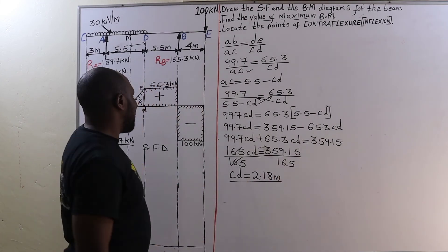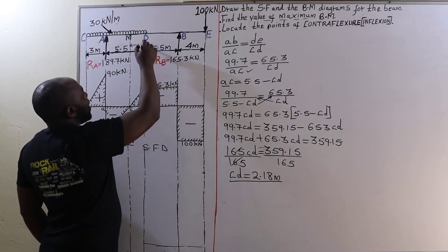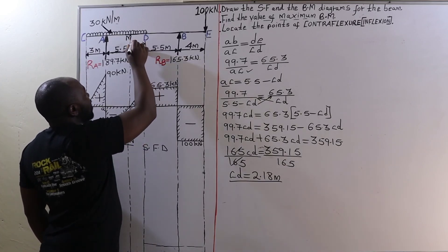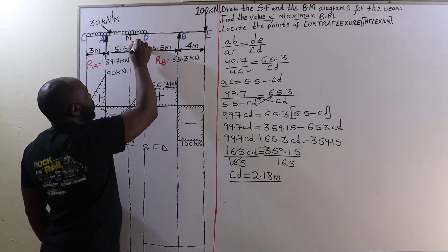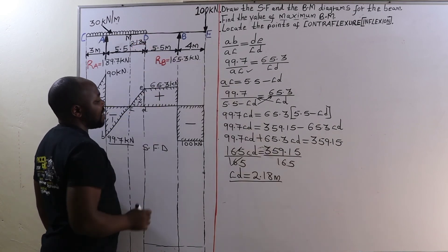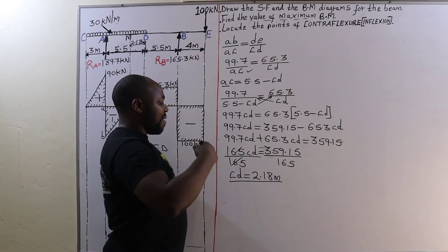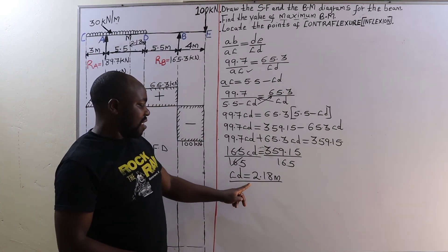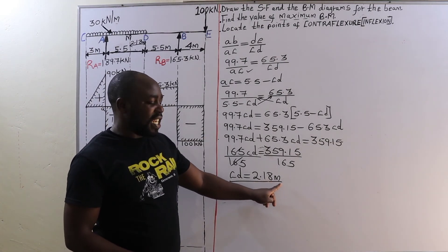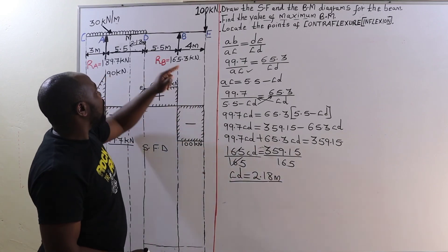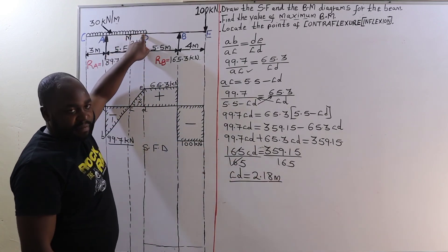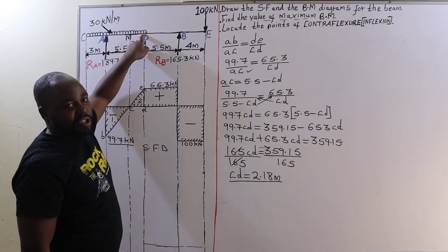2.18 meters. Therefore the distance from D to M is 2.18 meters. So we can say that the position of the maximum bending moment is 2.18 meters from point D.